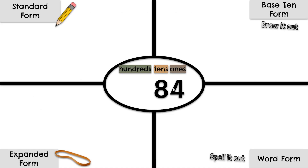Let's begin with the number 84. The 4 is in the 1's place, the 8 is in the 10's place. When we represent 84 in standard form, we simply write it down.